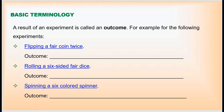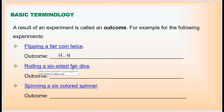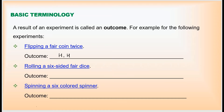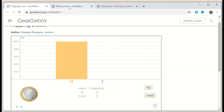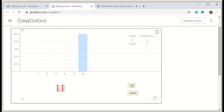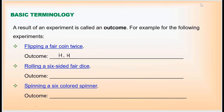So the outcome is: first flip is head, second is also head. Next example is rolling a six-sided fair dice. If I roll it once I get six, then three, then one. So my outcomes are six, three, and one.